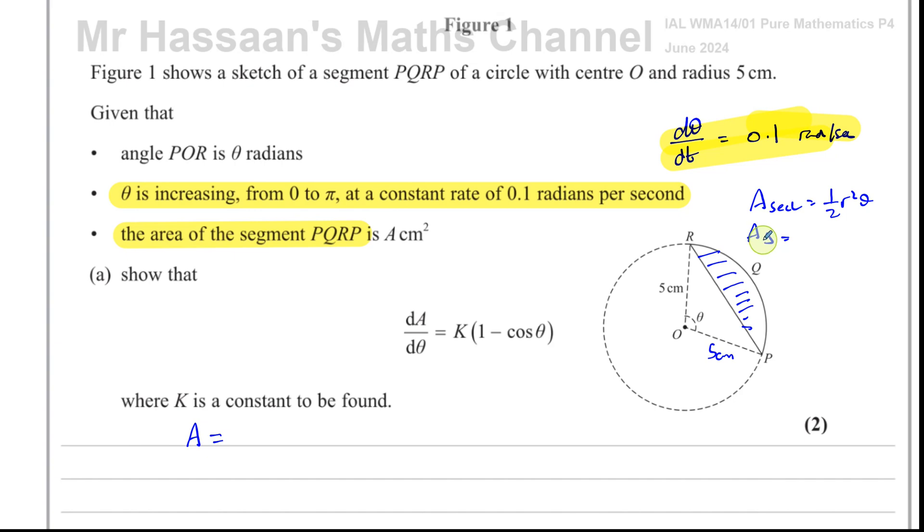And the area of this triangle here is given by 1/2 times r times r, which is r², times sine of theta, because it's 1/2 ab sin C. We have the two sides and the angle between them, we can find the area of the triangle. Now, we know that r is equal to five. So the area of the sector, or the segment, is going to be these two subtracted. The area of the sector minus the area of the triangle leaves us what we want. That gives us a formula, which we should know.